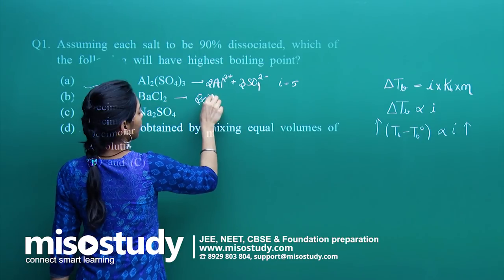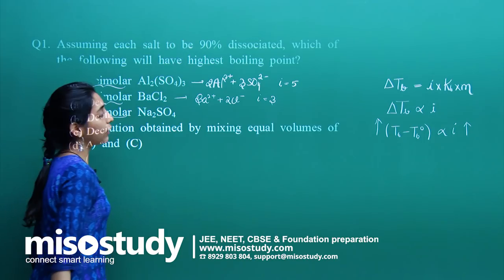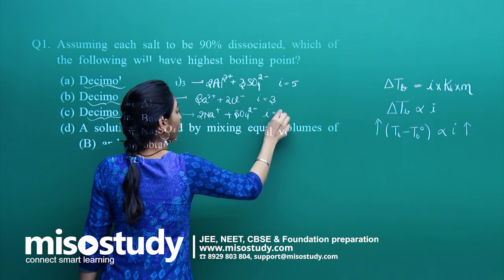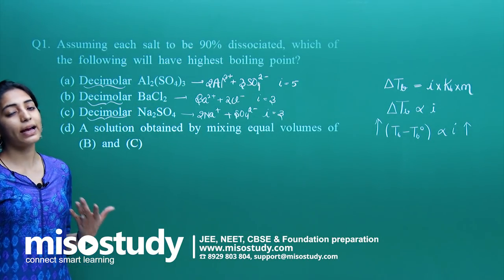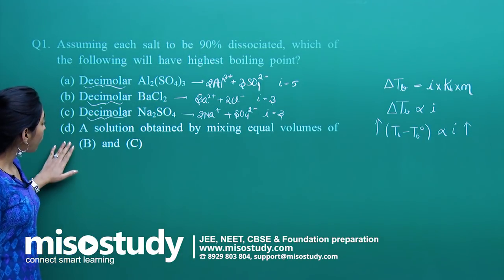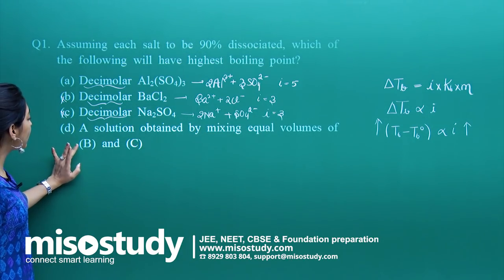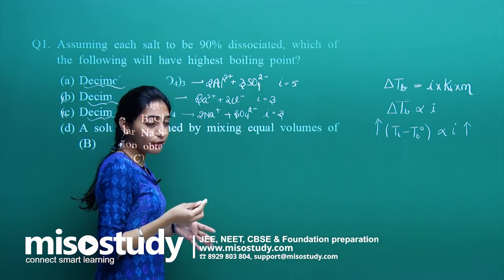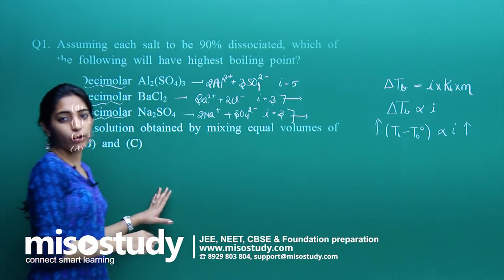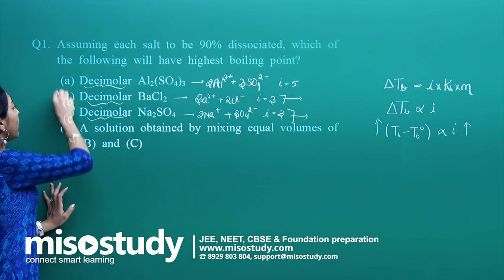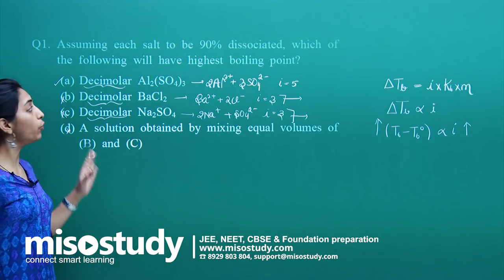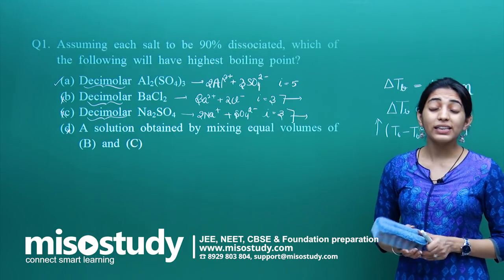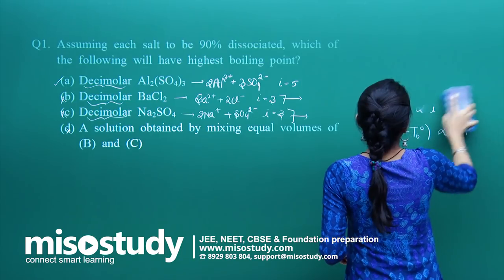BaCl₂ gives Ba²⁺ and 2Cl⁻, so i = 3. Na₂SO₄ gives 2Na⁺ and SO₄²⁻, so i = 3 again. For a solution mixing equal volumes of B and C, the overall i comes to 1.5 + 1.5 = 3. So the maximum i value is 5 for Al₂(SO₄)₃, which means option A will have the highest boiling point.